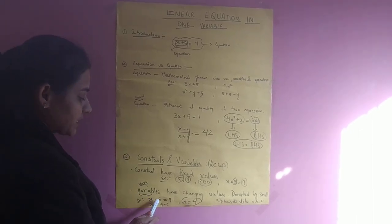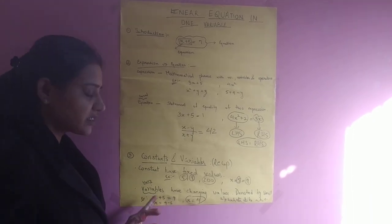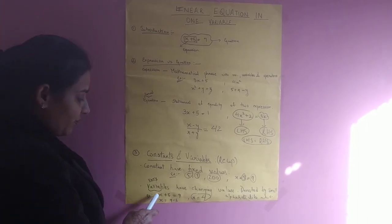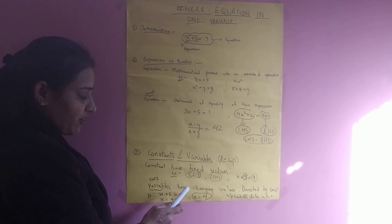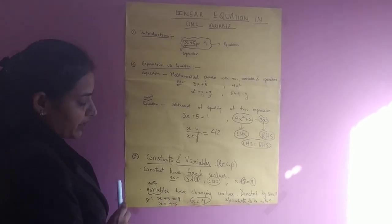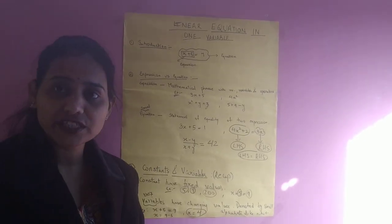Take an example: x plus 5 equals 9. So its value will vary. Its value will change. So when you are taking the constant as 5 and 9, the value of x will be x equals 9 minus 5. The value of x will be 4. The value of x will change.